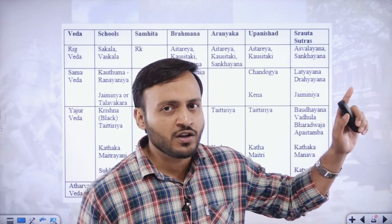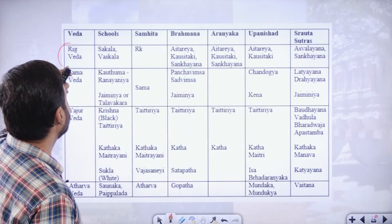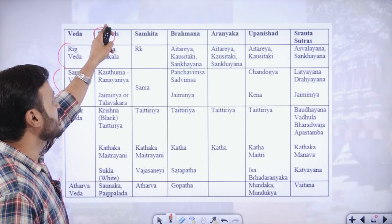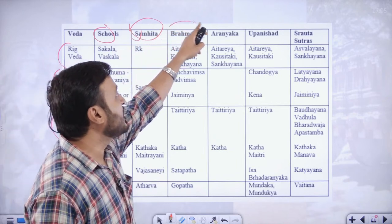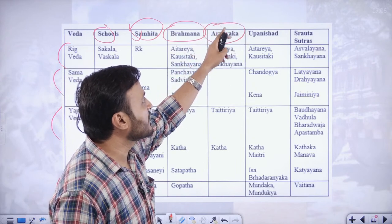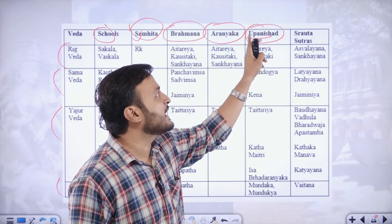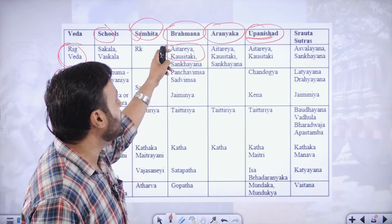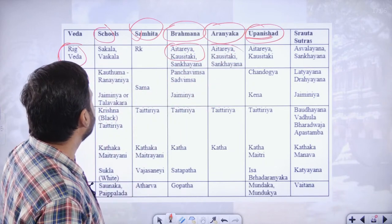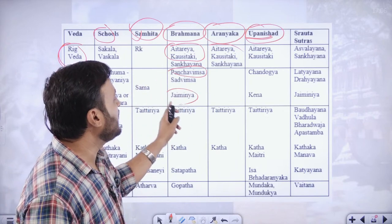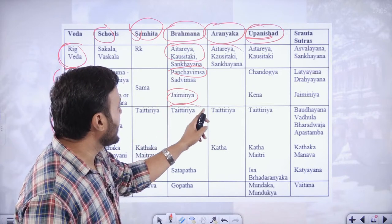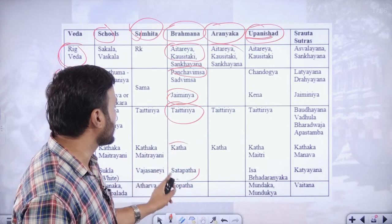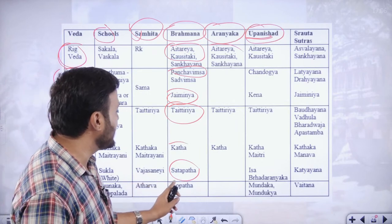The Shruti literature has different recensions. The original text is called Samhita, the description is called Brahman, and the commentaries are known as Aranyak. The question-answer compilation based on philosophy is called Upanishad. The Brahman of Rig Veda is Atreya and Kaushitaki. The Brahman of Samaveda was Panchavish and Jaimini. The Brahman of Yajurveda is Tatthri and Satpath. The Brahman of Atharva Veda is Gopath.